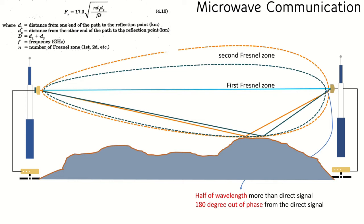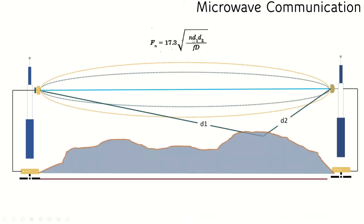If the Fresnel zone shrinks, you have a safer distance from obstacles. If the Fresnel zone widens, there is a greater possibility that obstacles will enter the first Fresnel zone. If the values of frequency (f) and distance (d) increase, the Fresnel zone radius decreases, and if they decrease, the radius increases.